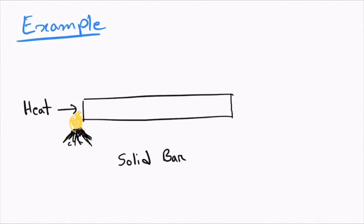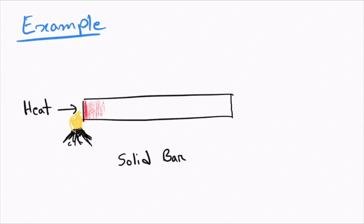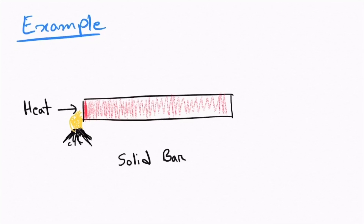Now let's look at an example of heat conduction. Imagine you have a solid metallic bar and you are heating the left end of the bar. Heat is going to propagate from the left end towards the right end because there is a temperature gradient — the left end is at a higher temperature — which is driving this heat conduction.